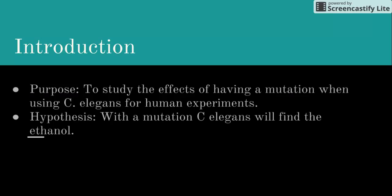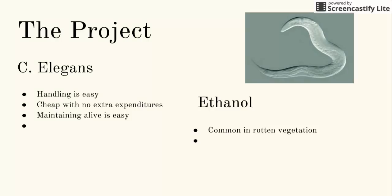Our hypothesis: with the mutation C. elegans will find the ethanol. C. elegans are a type of nematode that are commonly used around the world in science. Our object of interest is C. elegans because they are very common and also because they are only attracted to the ethanol portions of the fruits, and thus having a mutation hindered their ability to travel to the ethanol.